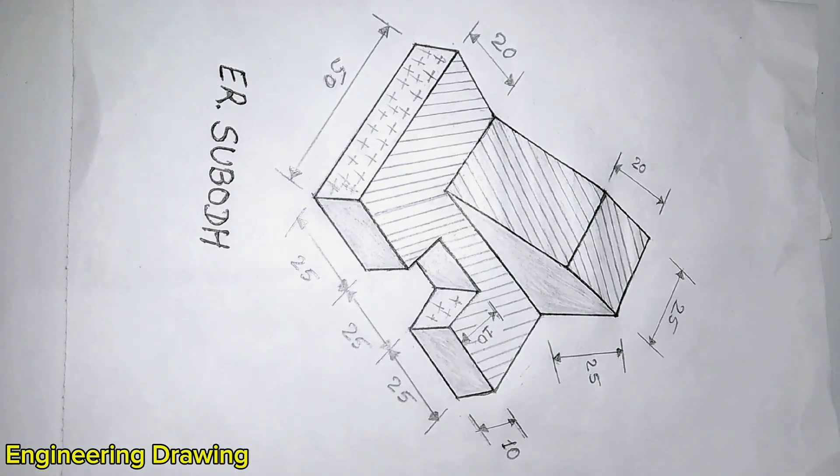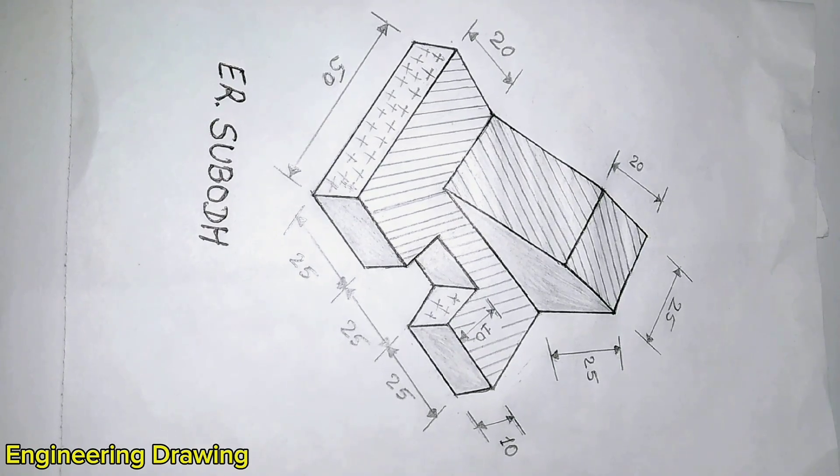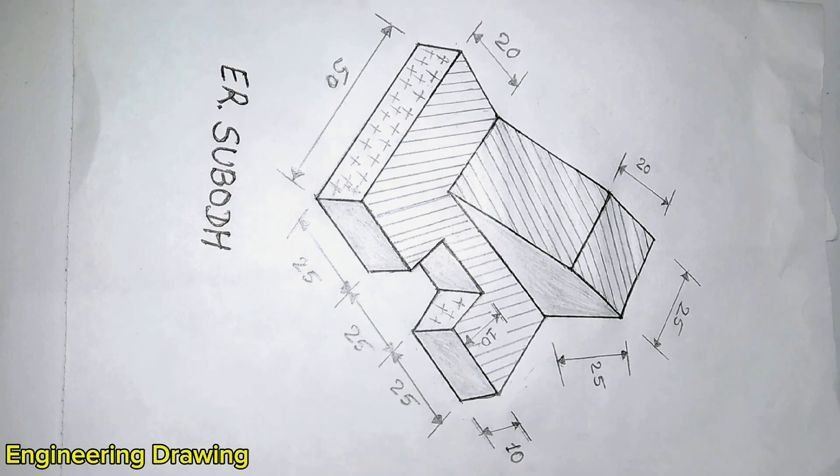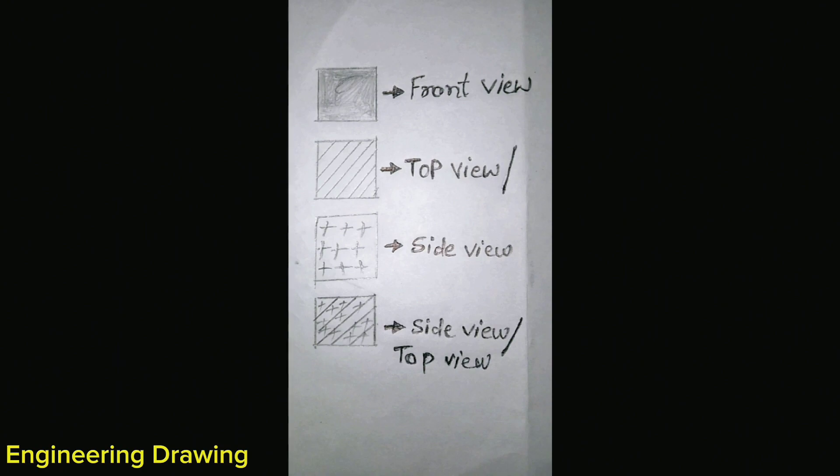Today we'll learn about orthographic projection. Orthographic views are 2D images of a 3D object obtained by viewing it from different orthogonal directions. Three principal views are possible and are named front, top, and side views. Here you can see how front, top, and side views have been shown in this.